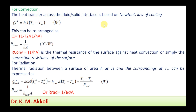For convection, heat transfer across or within a fluid, or from a solid surface to the surrounding fluid, is based on Newton's law of cooling: q equals hA(Ts minus T∞), where h is the heat transfer coefficient, A is the surface area, Ts is the surface temperature, and T∞ is the ambient temperature. This can be rearranged as: q_convection equals (Ts minus T∞) divided by (1 divided by hA). So R_convection equals 1 divided by hA, which is the thermal resistance of the surface against convection, or simply the convection resistance of the surface.